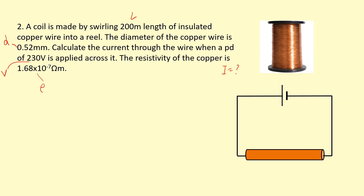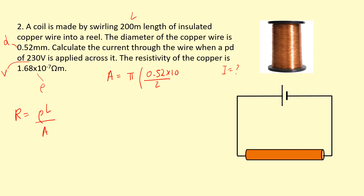First, we need to find the resistance using R = ρL/A. We'll calculate the cross-sectional area separately. Since we're given the diameter, the cross-section is a circle, so we use A = π(d/2)². The diameter is 0.52 mm, which we convert to meters by multiplying by 10⁻³, giving a radius of 0.52/2 × 10⁻³ meters, and we square that result.